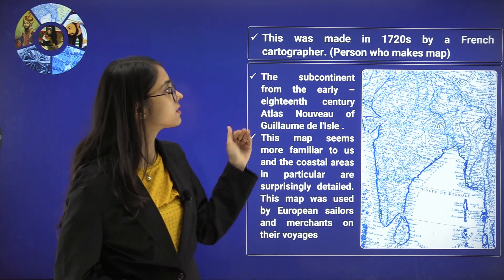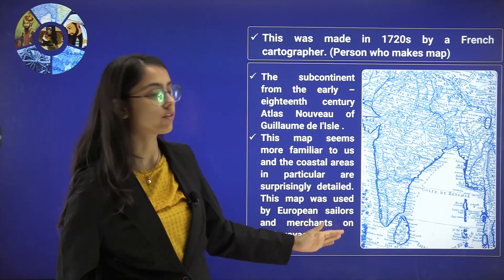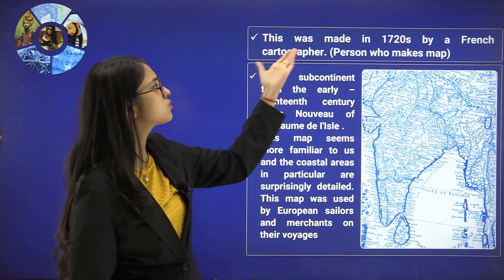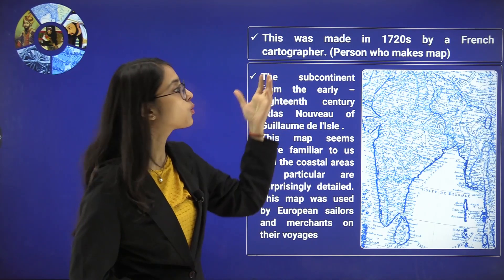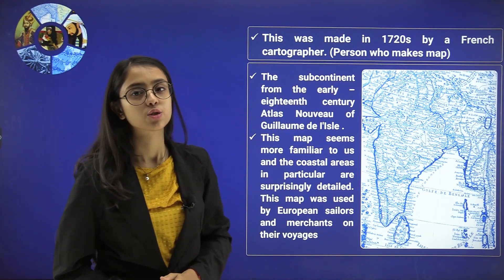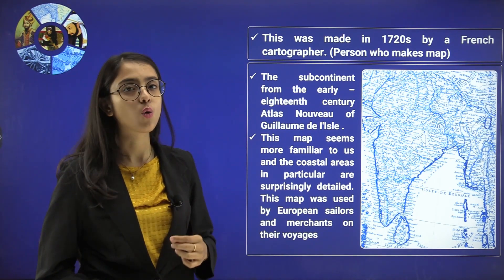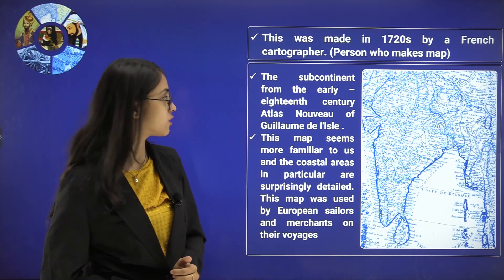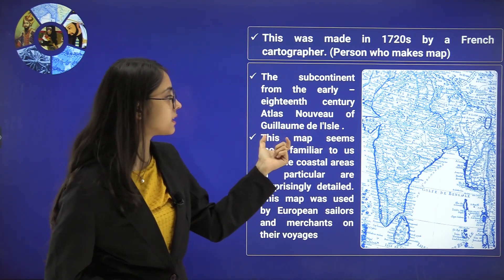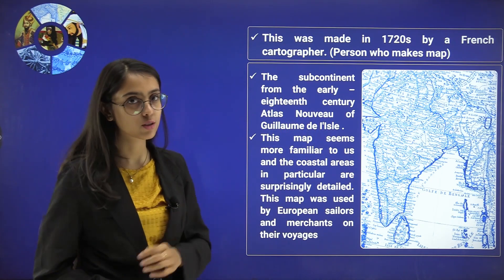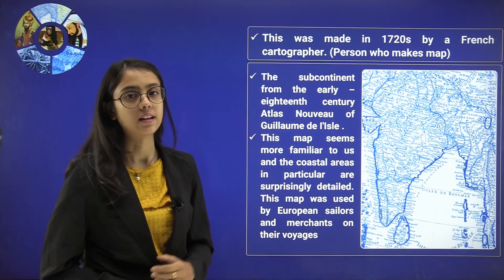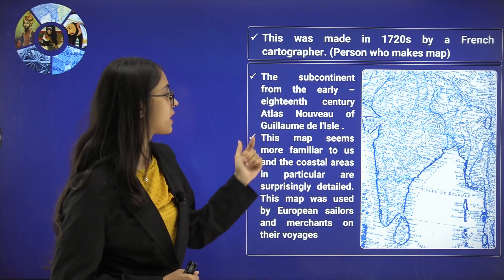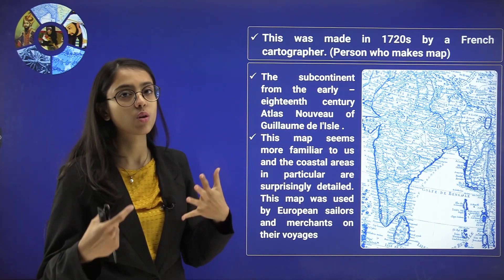There is another map of India made in the 1720s by a French cartographer. A cartographer is a person who draws or makes maps. This French cartographer made a map of the Indian subcontinent — the Atlas Nouveau of Guillaume de l'Isle. Guillaume de l'Isle was a cartographer who produced this new atlas. 'Nouveau' in French means new. This map seems more familiar to what we have today.